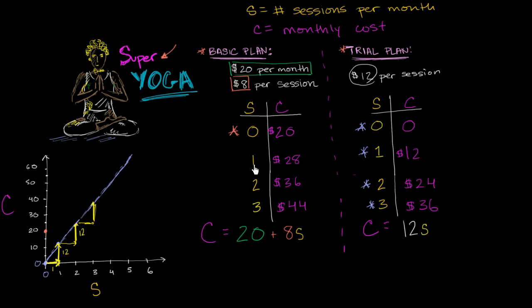What about one session? One session is going to cost me $28. Another way to think about it: you pay $20 no matter what. And as you add one session, your total cost went up by 8. You added one session, your total cost went up by 8.